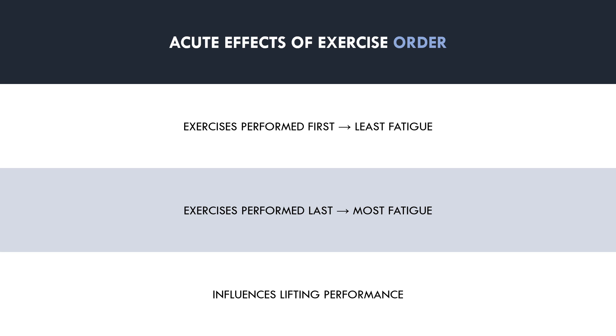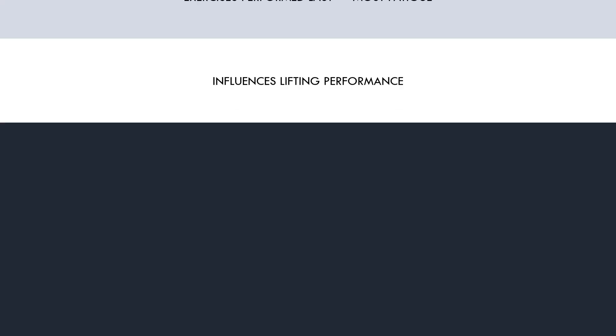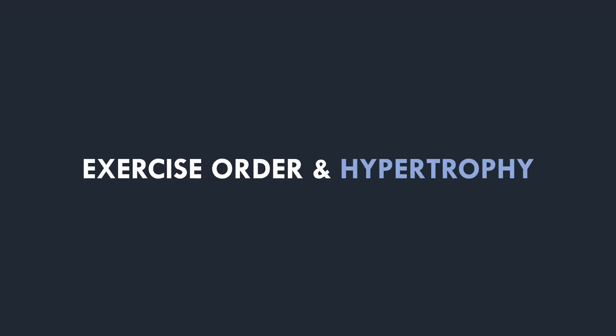If each exercise trains different muscle groups, then fatigue of subsequent exercises won't be as significant. So once again, context plays an important role when discussing exercise order. The acute effects of exercise order are fairly intuitive — we know that exercise order may influence fatigue and therefore impact lifting performance. However, what we really want to know is how this influences actual muscle growth in an applied resistance training program.